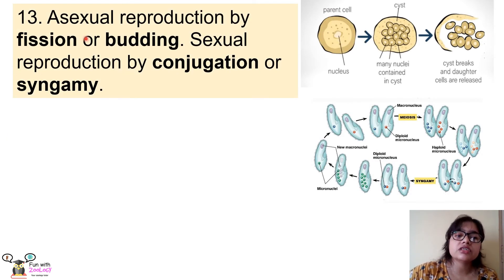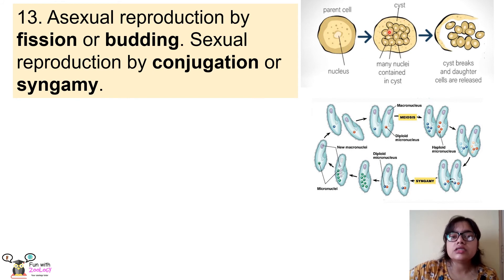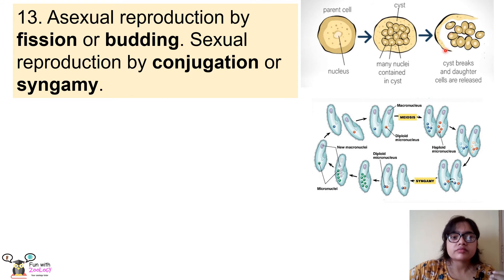The next important physiological process is reproduction. Reproduction can occur in two ways: asexual and sexual. In asexual reproduction — by fission or budding — only one parent cell is needed. During unfavorable conditions, the parent cell starts multiplying its nucleus and forms a cyst, a hard covering on the outside. When favorable conditions return, such as humidity, rainfall, or sunlight, the cyst ruptures and the multiple nuclei along with some cytoplasm are released into the environment.